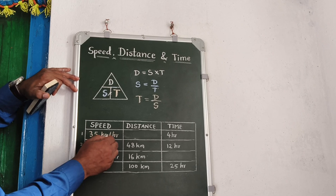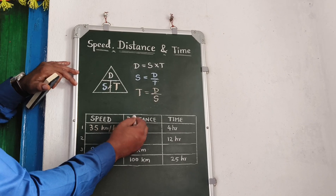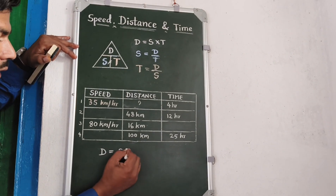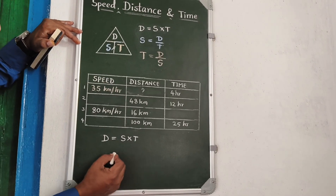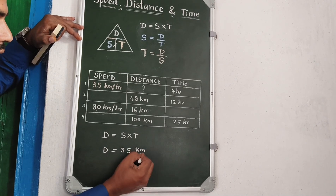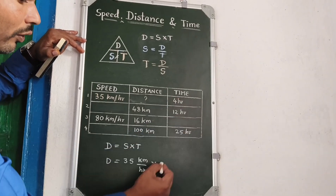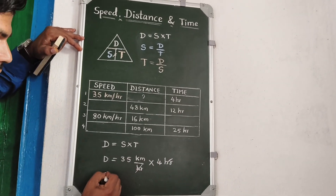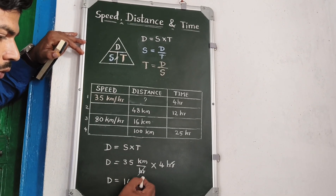Speed is 35 km per hour, distance is not given, time is 4 hours. Distance is equal to S into T. S is equal to 35 km per hour, T is equal to 4 hours. Hours cancel. D is equal to 140 km.